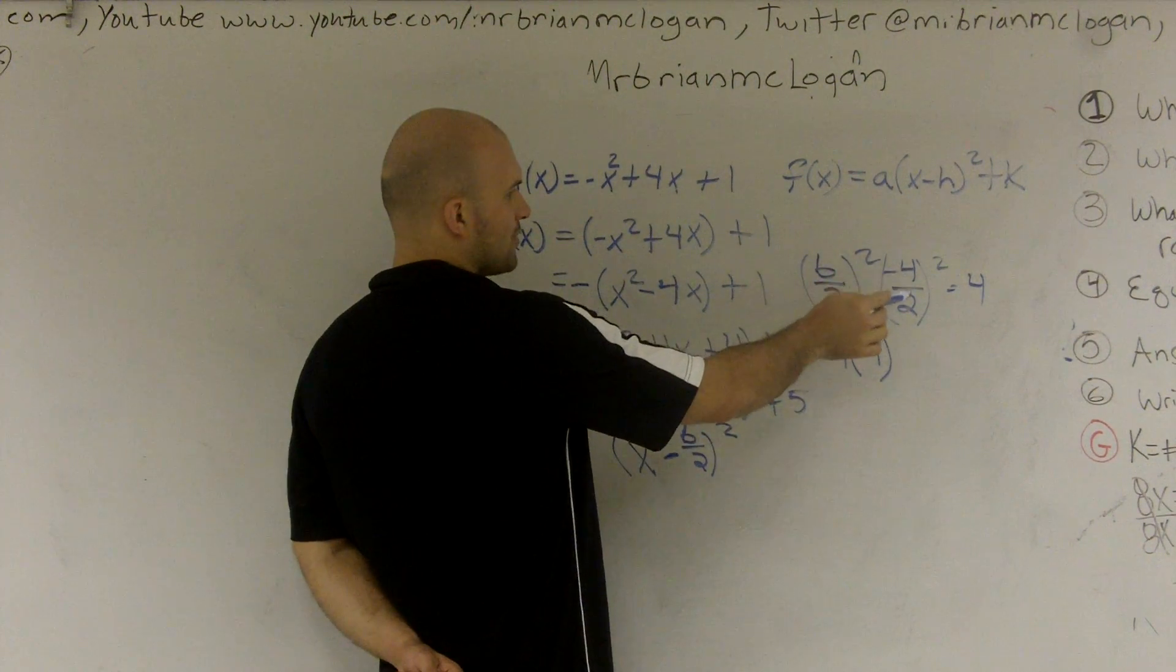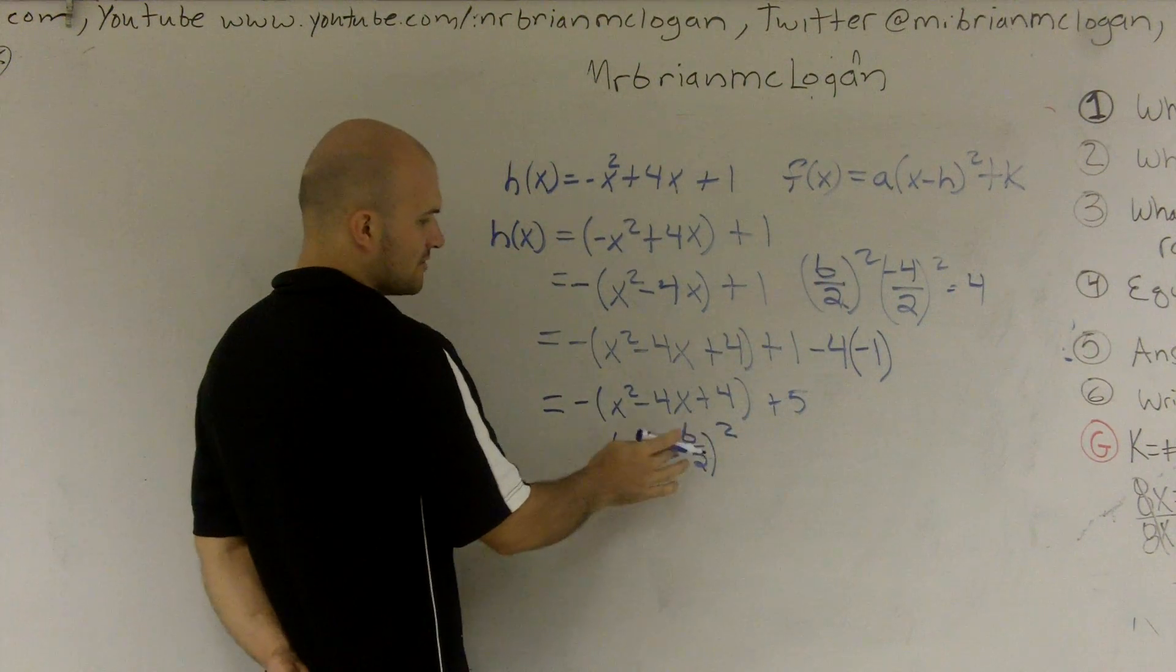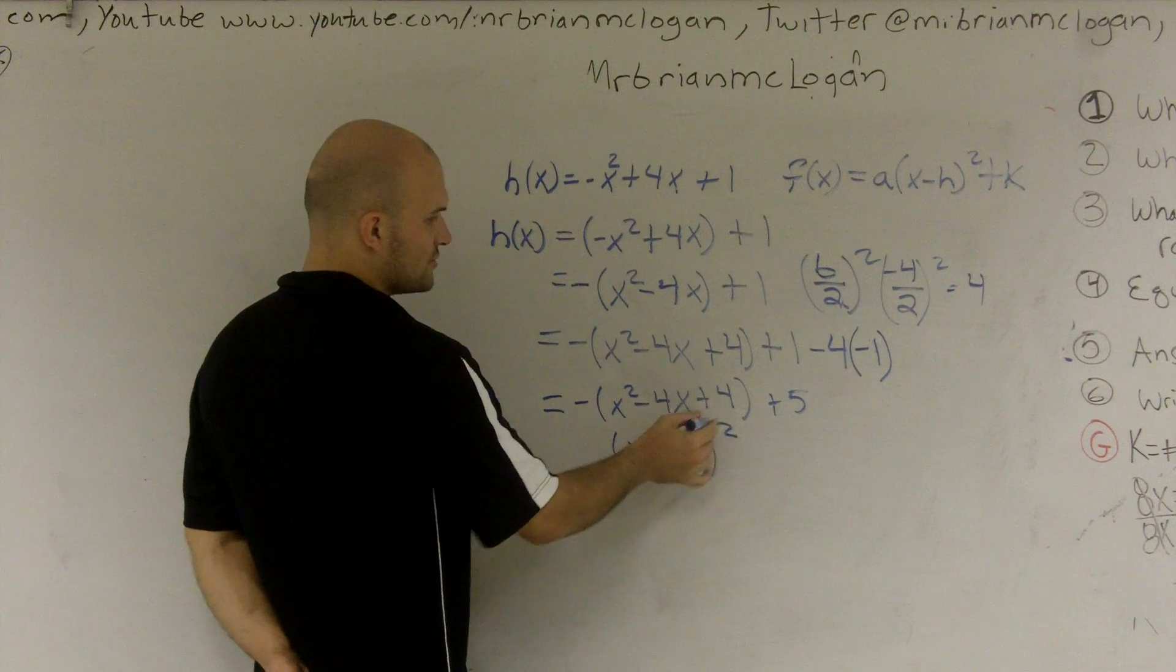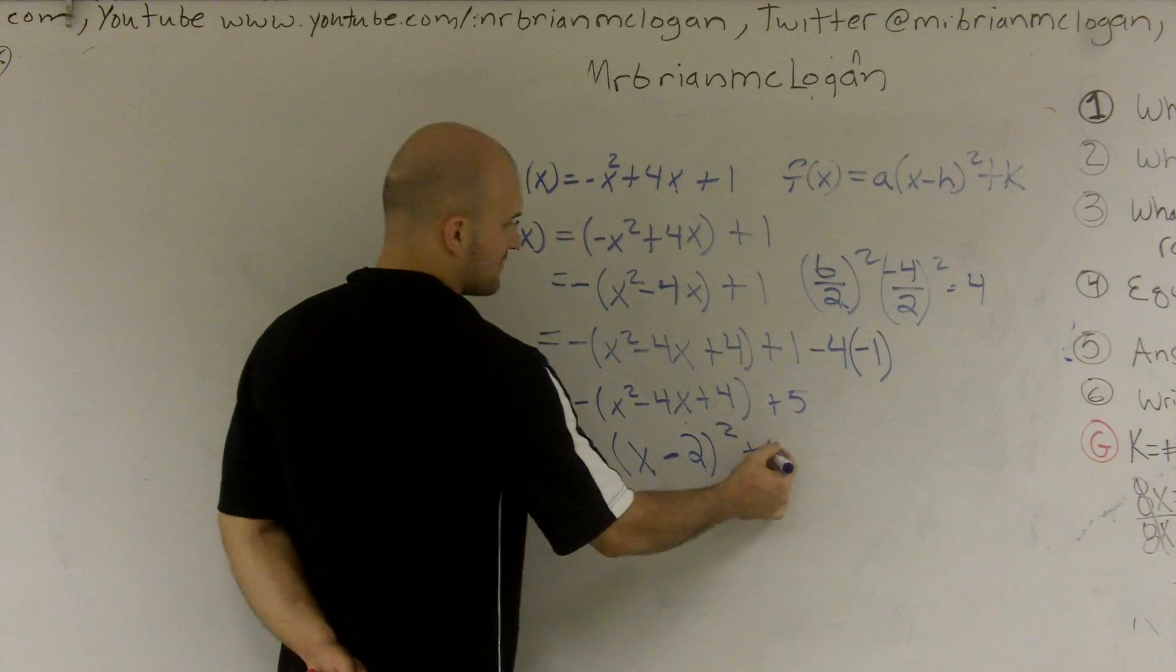Well, b divided by 2 is a negative 4 divided by 2, which is a negative 2. So it's x minus 2 squared equals this plus 5.